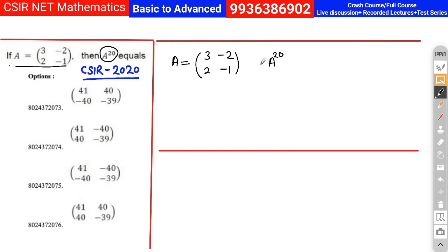Out of the six problems, two are concept-based and four are direct result problems — like the previous question where you just take a counter-example. For this question, there is a concept: if you add all elements of each row and get a uniform value for every row, you can use this for any power. Here, row 1: 3 + (−2) = 1, and row 2: 2 + (−1) = 1. Both rows sum to 1.